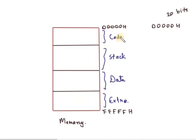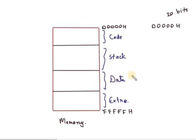Programs are stored in the code segment. In the stack segment, data is stored in stack format — last in, first out. Data is stored in the data segment. Extra segments hold some random or additional data.